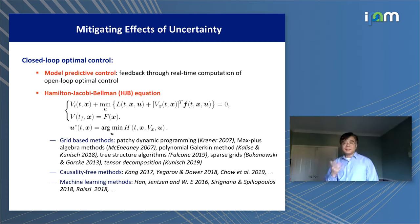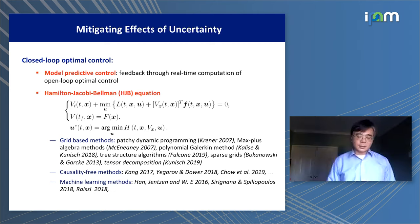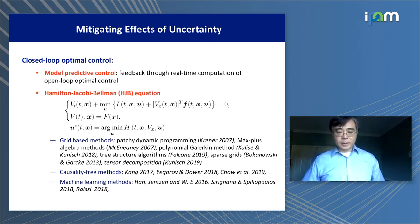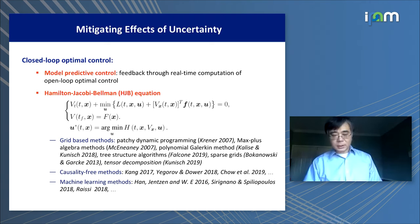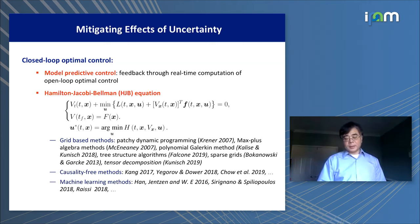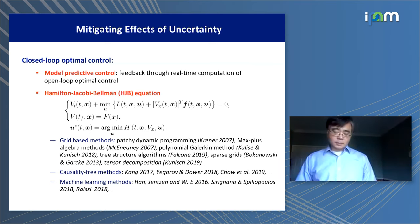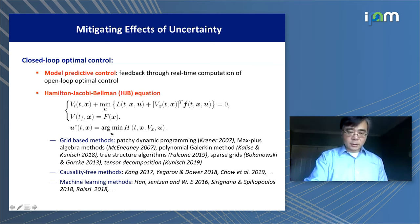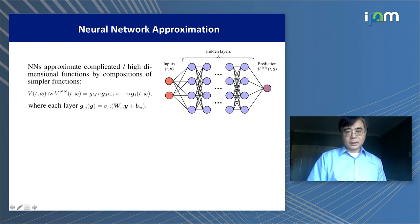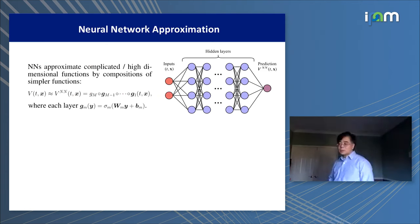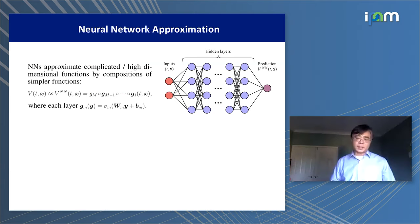Here is a very incomplete list of some existing methods for solving the HJB. They include grid-based methods, causality-free type methods, and more recently, machine learning type methods. In this talk, the method we present basically belongs to this last category — machine learning type methods. More specifically, we want to use neural networks to approximate the solution of HJB equations.